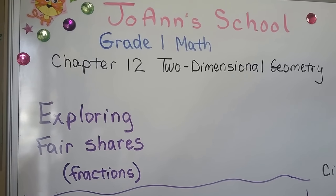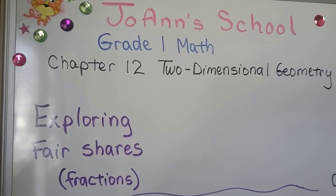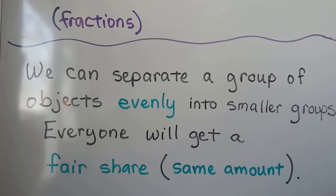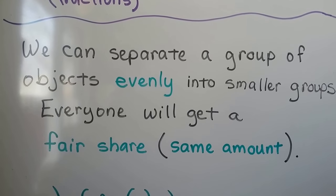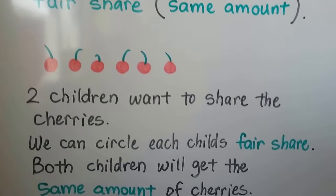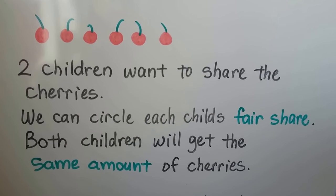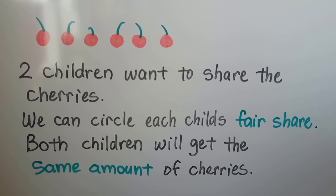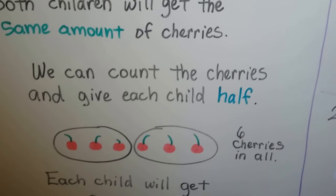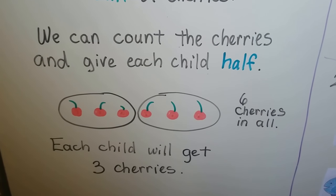We're going to wrap up Chapter 12 and talk about exploring fair shares, and we're still working with fractions. We can separate a group of objects evenly into smaller groups — everyone will get a fair share, the same amount. Two children want to share the cherries. We can circle each child's fair share. Both children will get the same amount of cherries. We can count the cherries and give each child half.